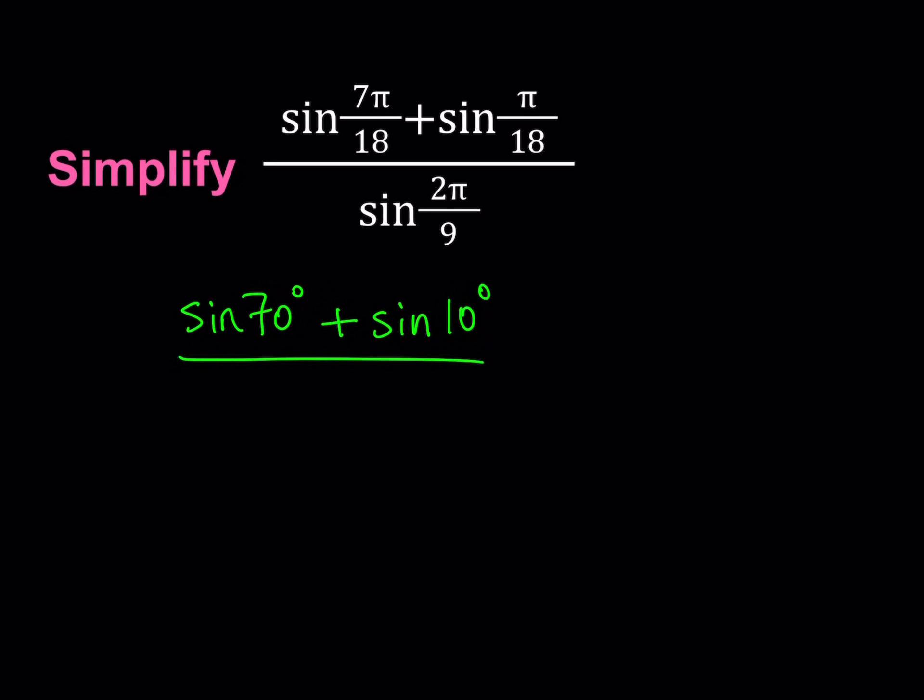And at the bottom, 180 divided by 9 is equal to 20, 2 times 20 equals 40. We're going to get sine of 40 degrees.